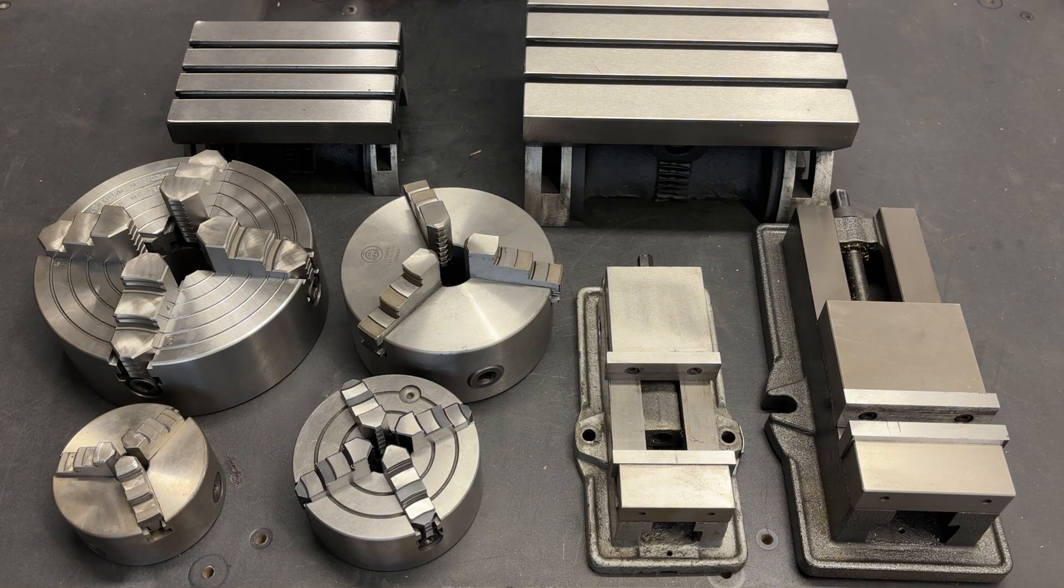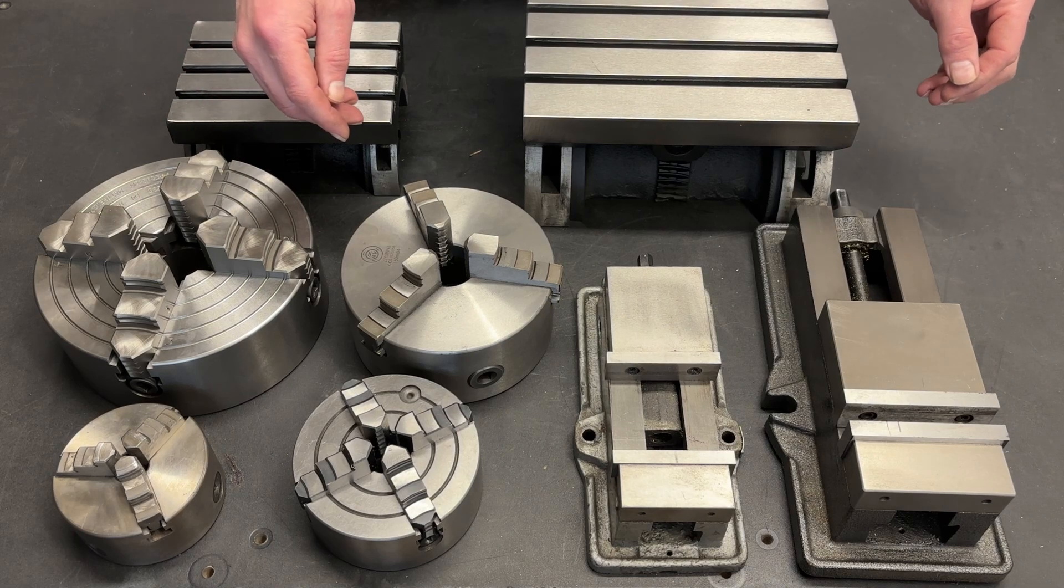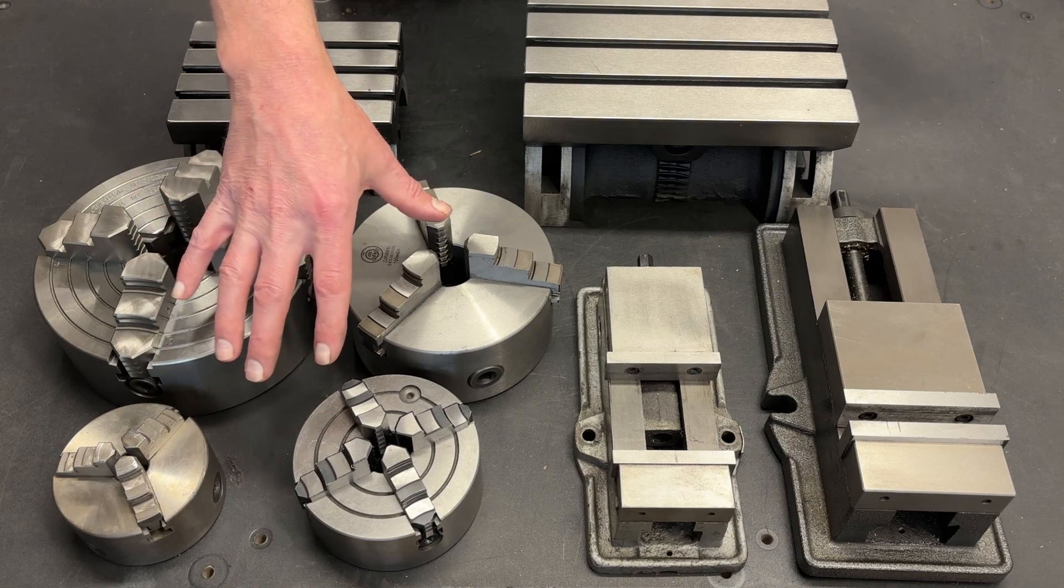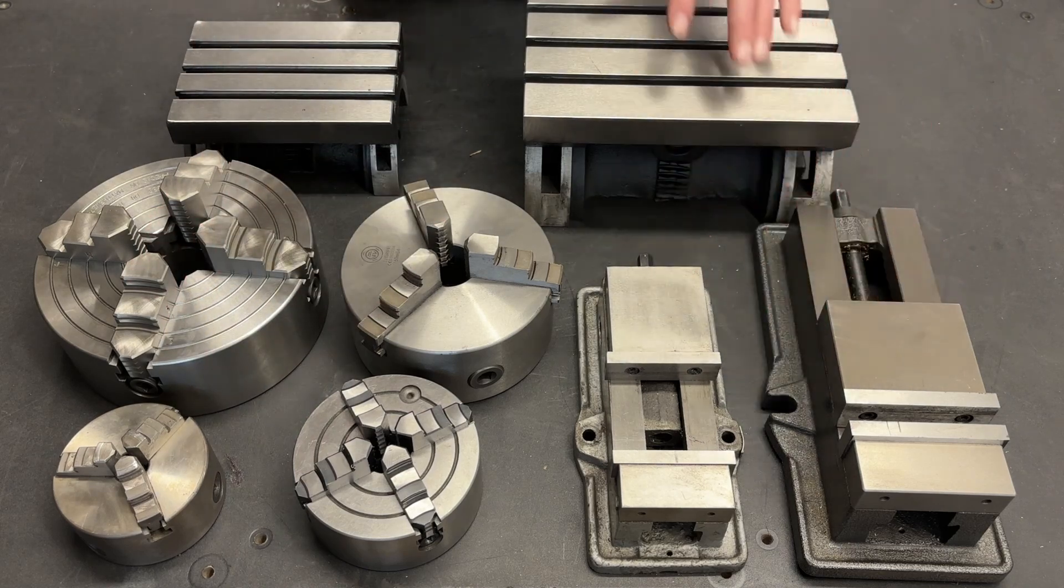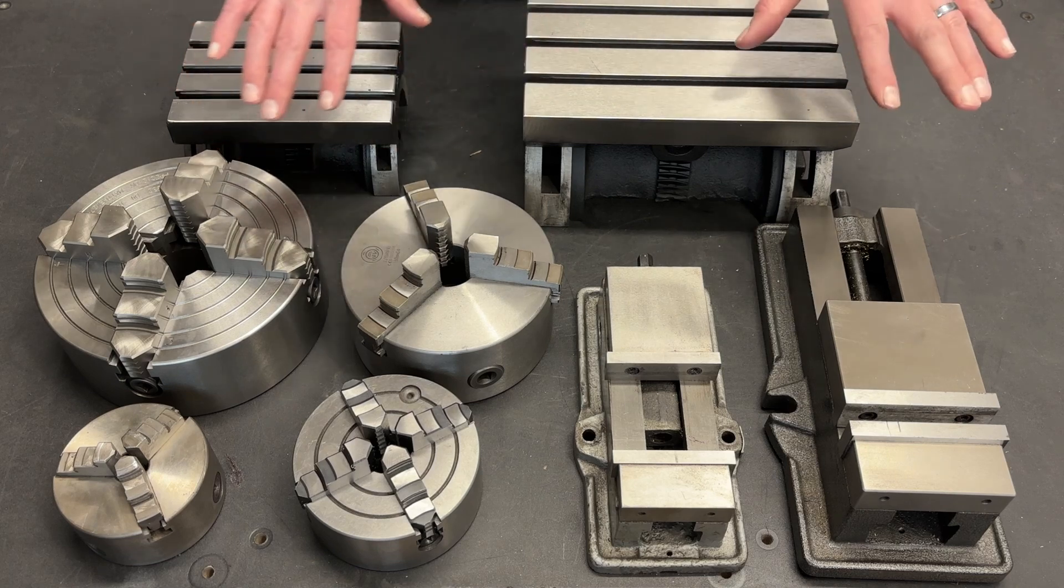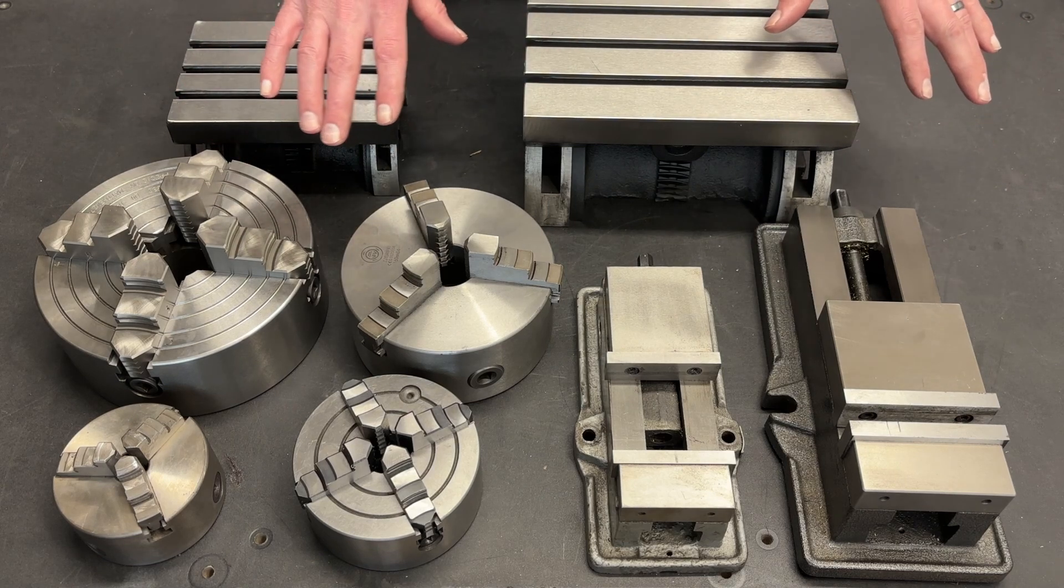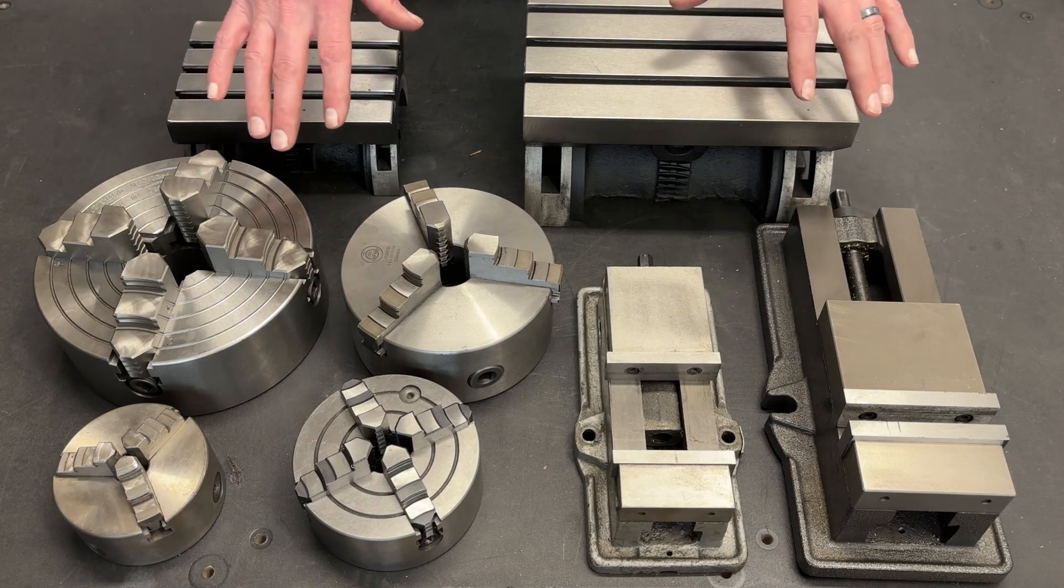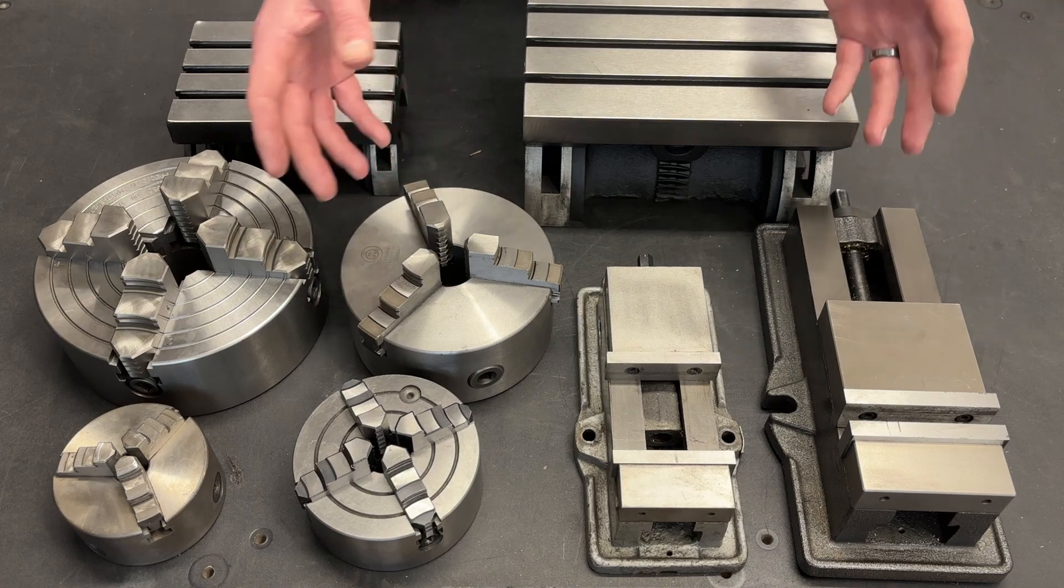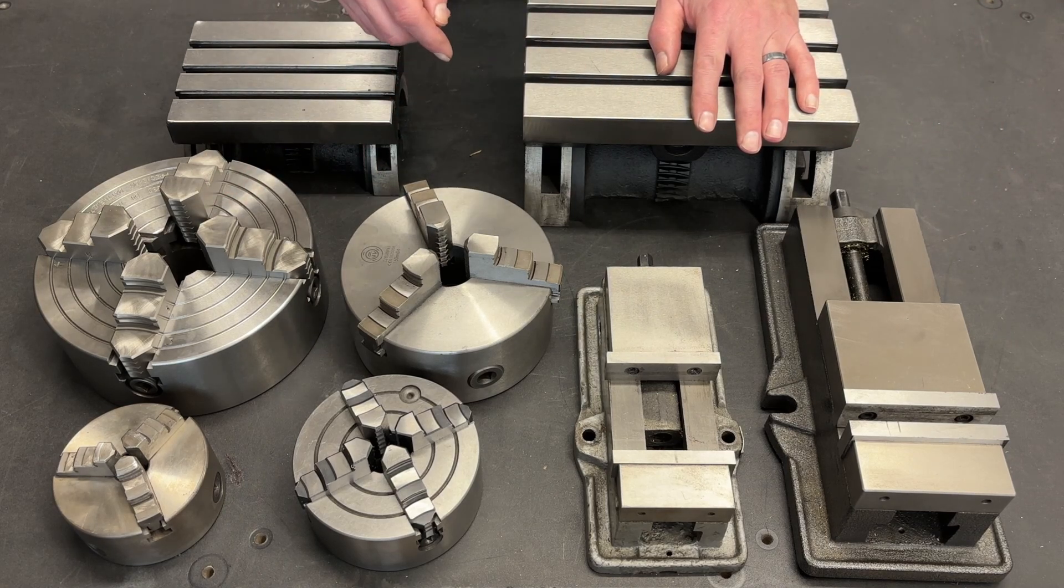Greetings fellow DIYer and welcome to my video. So here I have an assortment of tooling for the mill and for the lathe, and I basically have three different components. I have chucks, I have mill vices, and then I have angle adjustment mill tables. We're going to look at each of these individually and just do a little bit of a comparison as to how much bigger the next size up really is, and also give some tips and information as to why you might choose to go smaller or choose to go bigger.